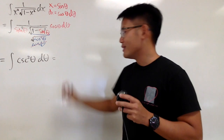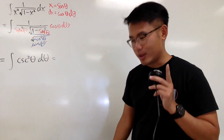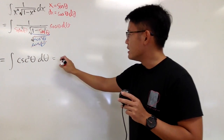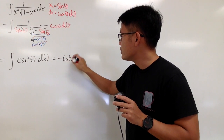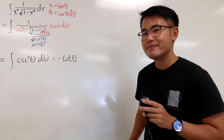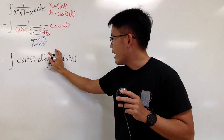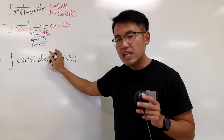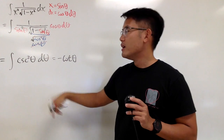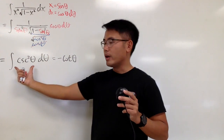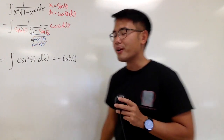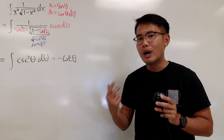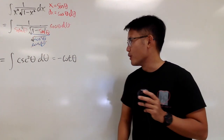The integral of cosecant squared theta is negative cotangent theta, because if you differentiate cotangent theta you get negative cosecant squared theta. So we need the extra negative to make it positive. That's pretty much it — but as always, we have to go back to the x world.